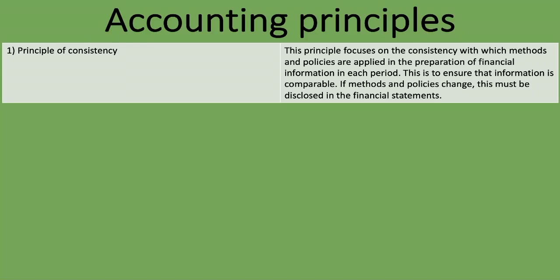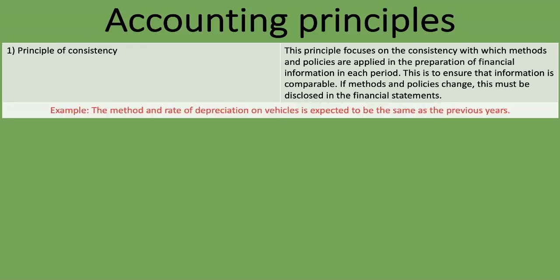As the word 'consistency' implies, we have to be consistent in our preparation of financial information. If we're looking at financial information for a specific company over a few periods — maybe two years — we should be confident that this information was prepared consistently from one period to another. If methods and policies change, this must be disclosed so that users can take that into account when analyzing the statements.